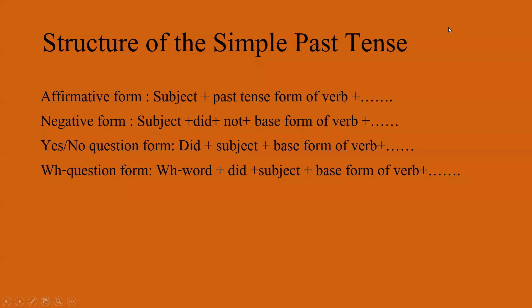Children, you can break it down into four sections. Here is the structure of the simple past tense. Basically, the formation is subject plus second form of verb plus object if any. We can break it down into four sections: number one, affirmative form; number two, negative form; number three, yes/no question form; and number four, WH question form.